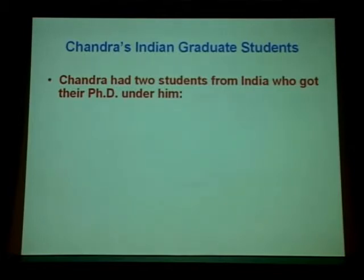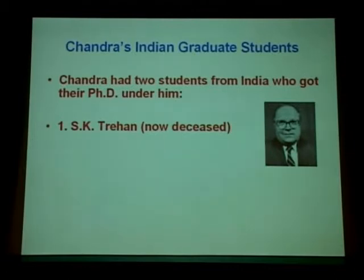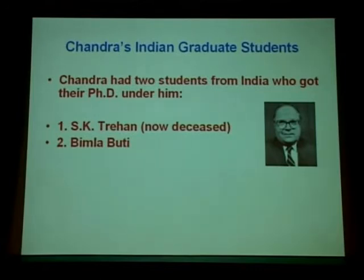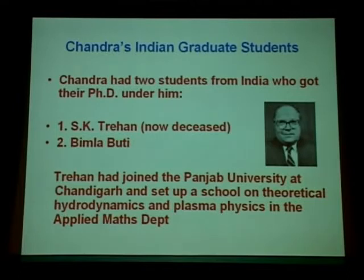Chandra did have two students from India who got their PhDs under him at a later stage. One was S.K. Trehan, who after completing his PhD under Chandrasekhar came back to India and joined Punjab University Chandigarh — he is no longer alive today. The second was a girl student, Bhimla Buti, who is a distinguished plasma physicist. Both of them were working on plasma physics, which was Chandra's interest at the time. Trehan set up a school on theoretical hydrodynamics and plasma physics in the applied mathematics department — this was clearly Chandra's inspiration.